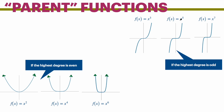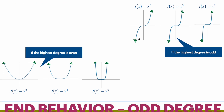Odd functions — x to the 3rd, x to the 5th, x to the 7th — are going to go in opposite directions. When one side is going up, the other side is going down. What's happening in the middle is it kind of flattens out the higher exponent you go. But if you think in terms of end behavior, you're thinking that it's going in opposite directions.